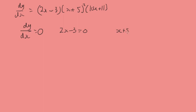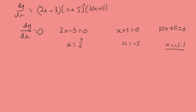Any of these three factors would have to be 0: 2x minus 3 equals 0 gives x equals 3/2; x plus 5 equals 0 gives x equals minus 5; and 10x plus 11 equals 0 gives x equals minus 1.1. At these three points the gradient will be 0.